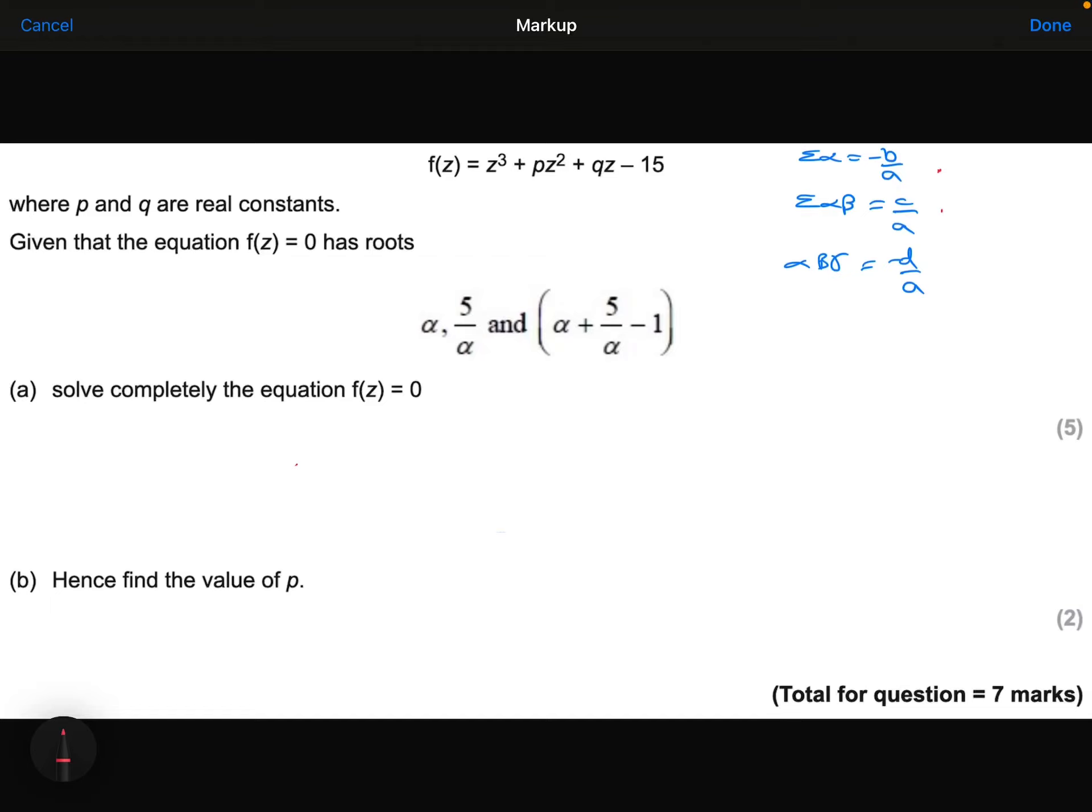We've got a cubic equation and we've got the three roots of alpha, 5 over alpha, and alpha plus 5 over alpha minus 1. We know that a cubic equation has these rules: the sum of the three roots equals minus b over a, the sum of the pairs of roots equals c over a, and the product of all three roots equals minus d over a.